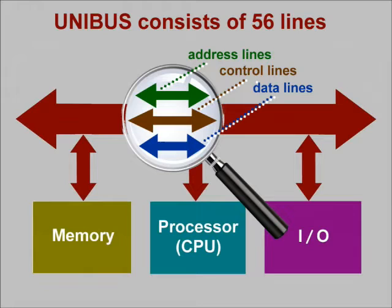The unibus that we've been talking about actually consists of 56 lines, or wires, to handle address, control, and data functions. We'll talk more about these lines in the next two study units.